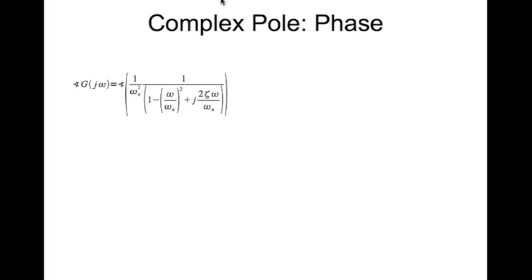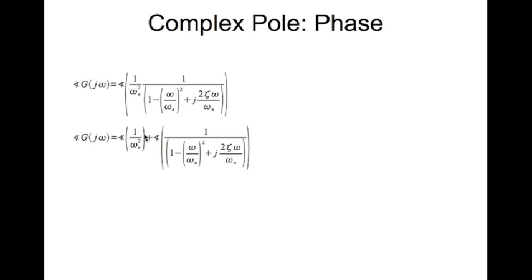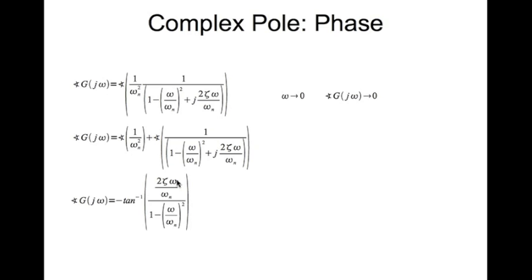Now let's look at the phase. The phase is essentially the angle of the expression, which works out to tan inverse of 2ζ(ω/ωₙ) divided by (1 - (ω/ωₙ)²). When ω tends to 0, the argument tends to 0, so tan inverse of 0 is 0 — at very low frequencies the phase of a complex pole is 0. When ω tends to ωₙ, the denominator becomes 0, so tan inverse of infinity is 90°, and the negative gives minus 90°. When ω tends to infinity, the angle tends to minus 180°.